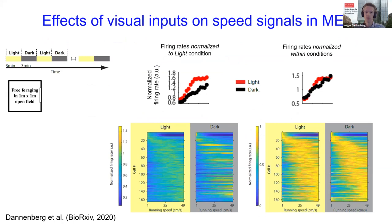To answer how changes in visual inputs affect speed signals and grid cell firing, we recorded single-unit activity in mice that randomly foraged in an open field environment during alternating light and dark conditions. We observed large changes in the firing rates of many neurons, including speed cells. Those changes in firing rates during darkness resulted in changes in the slopes of the speed tuning curves.